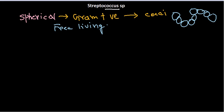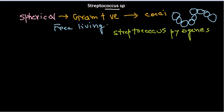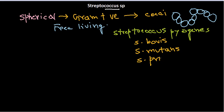Among the Streptococcus species, some are very important. One of the most important is Streptococcus pyogenes, which causes severe diseases in humans and is medically significant. Others include Streptococcus bovis, Streptococcus mutans, and Streptococcus pneumoniae, which is the causative agent for pneumonia. Note the spelling of the scientific names, which should be underlined.